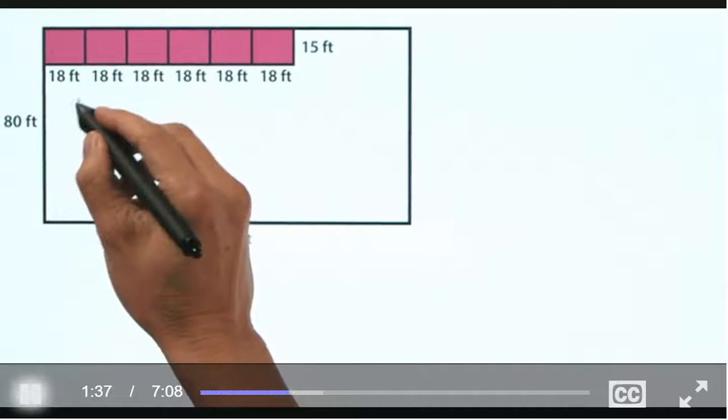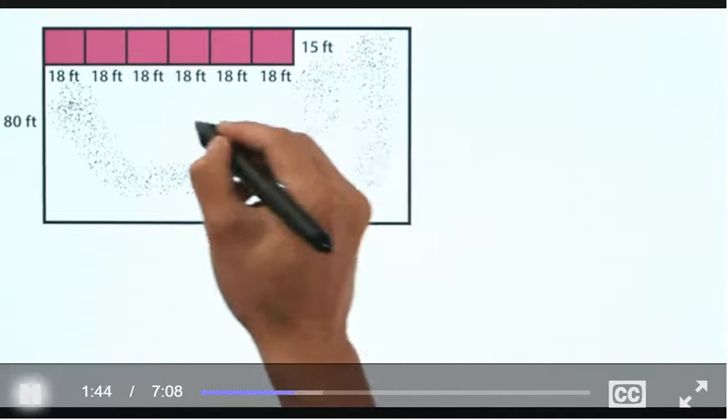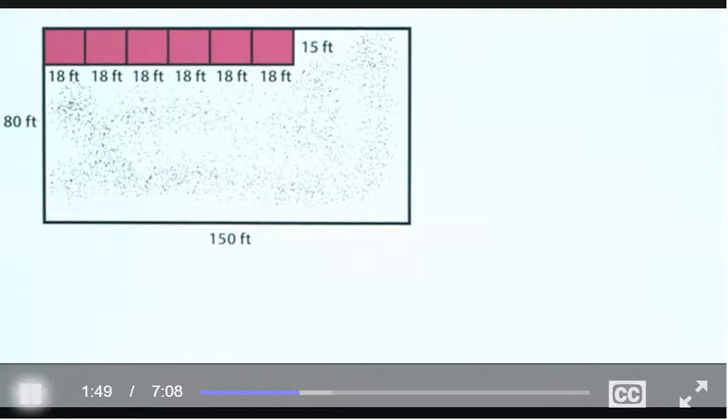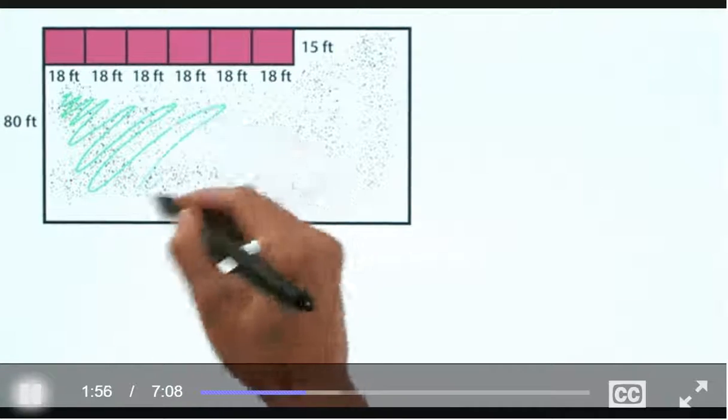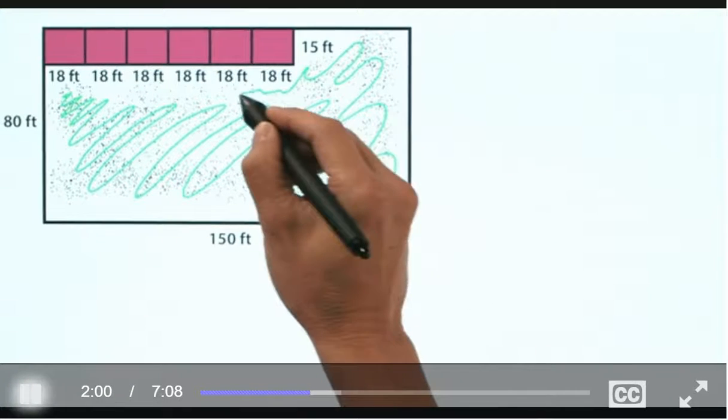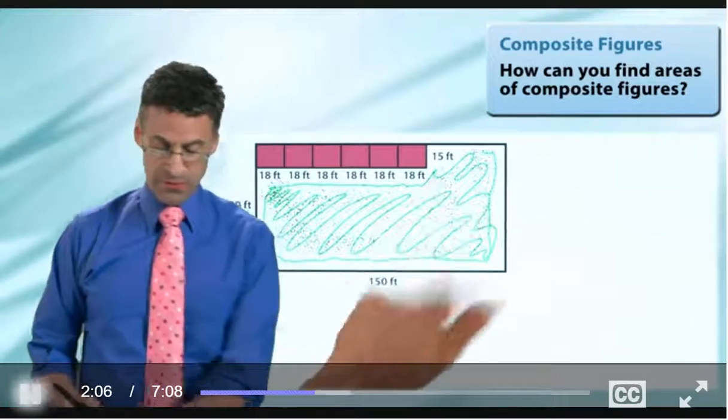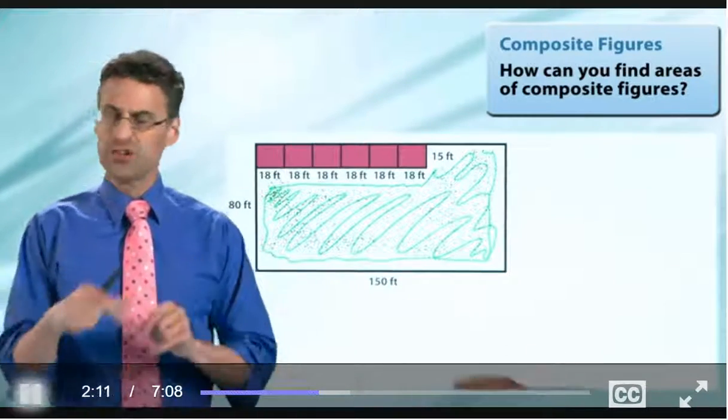So what we want to do is basically find the area of this region right here, which I was really hoping was going to be actually green to make it look really pretty. But instead, what I'll do is I'll do it like this. So here's the rest of the park, and I want to know what the area of that is. Well, how can we find the area of a shape that's kind of peculiar?